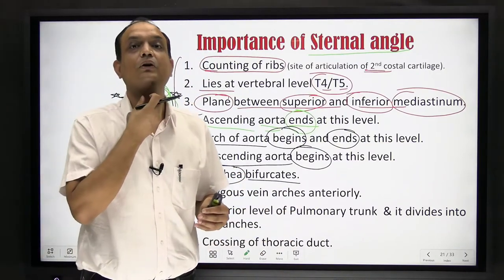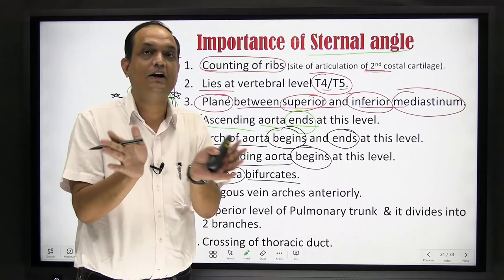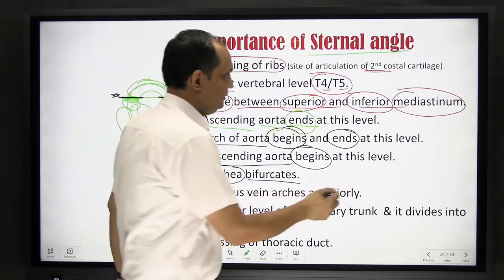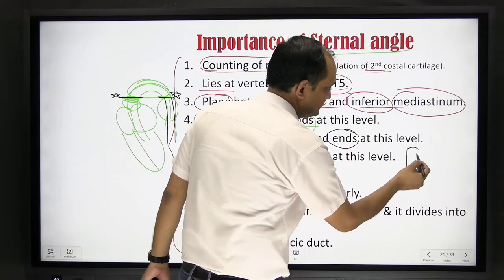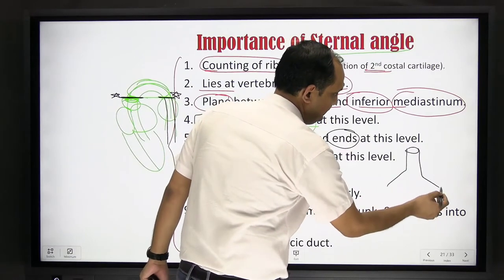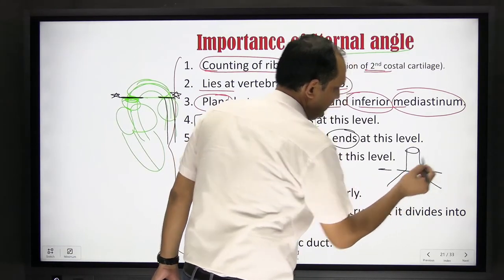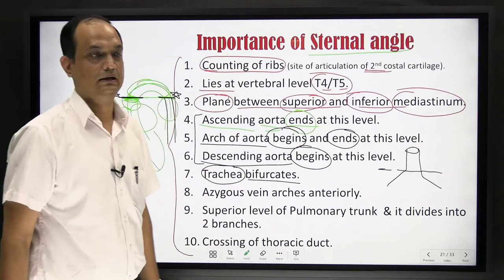The trachea divides into the right and left main bronchus, and this division also takes place at which plane? The answer is again: at the level of the external angle.